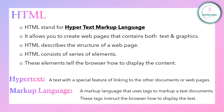Let's see what is the meaning of hypertext and markup language. Hypertext is a text with a special feature of linking to other documents or web pages. Markup language uses text to mark up text documents, and these texts instruct the browser how to display the text. You've all seen links in Wikipedia and other Google pages — the text by which we create the link is known as hypertext. Markup language means to just create the structure of the web page.